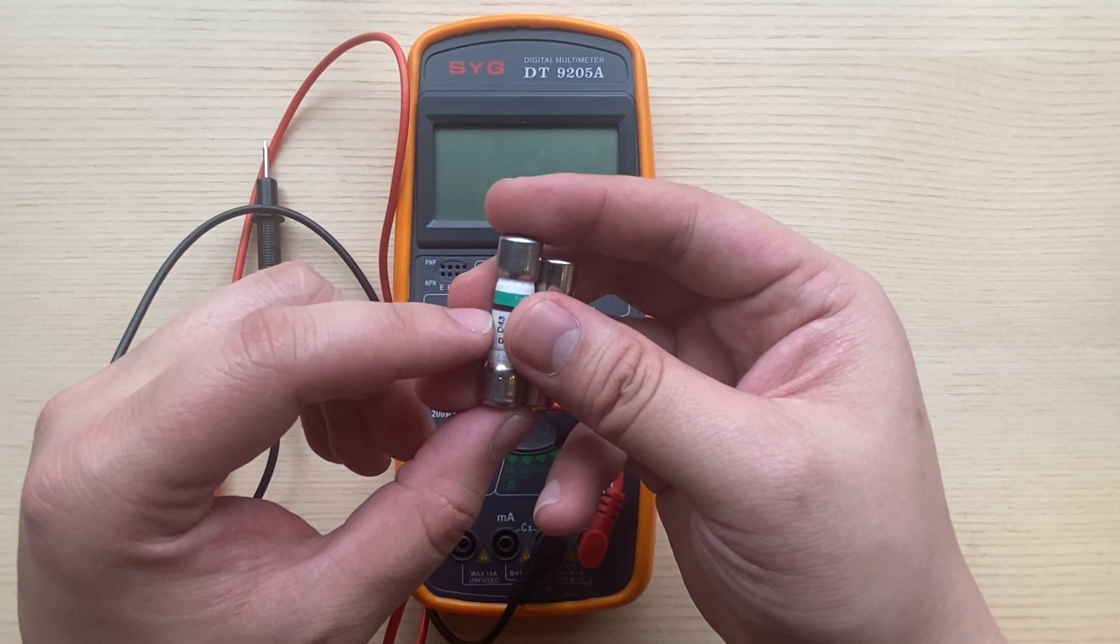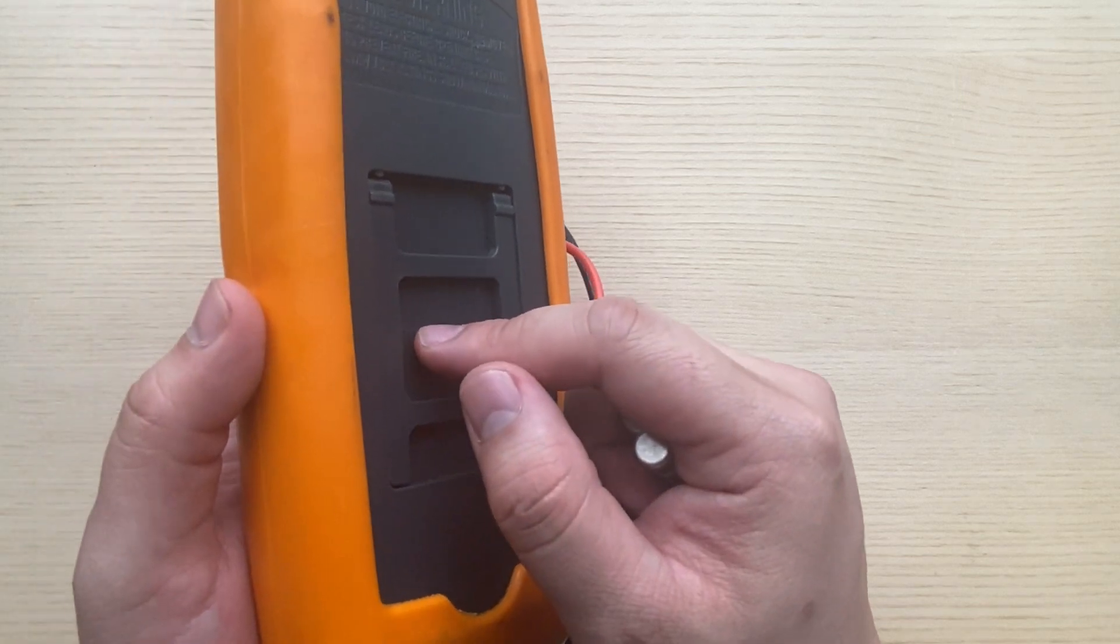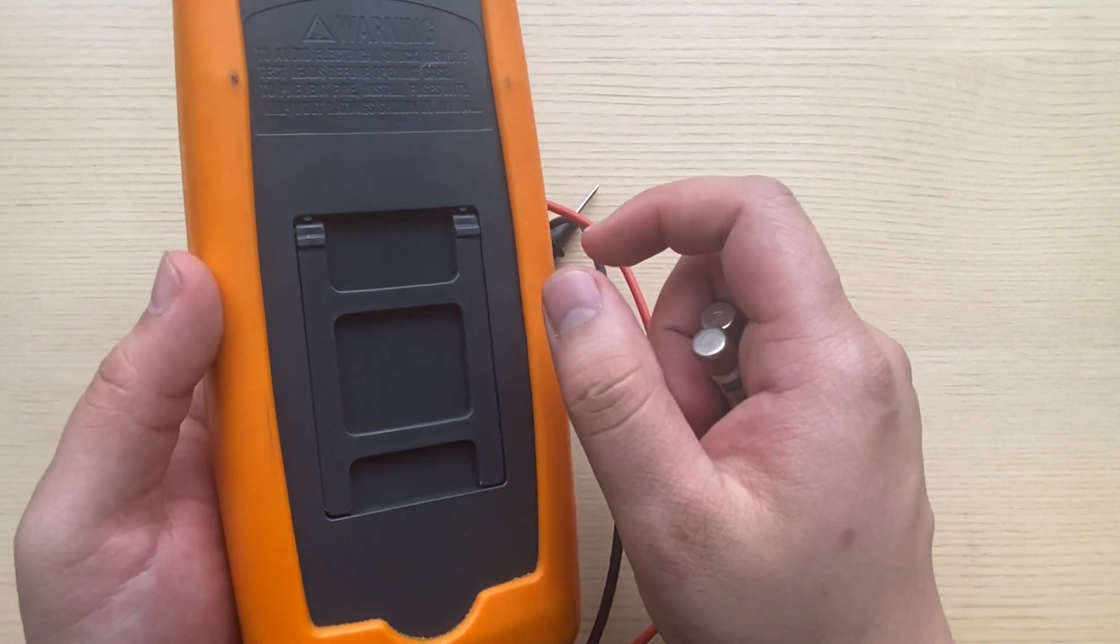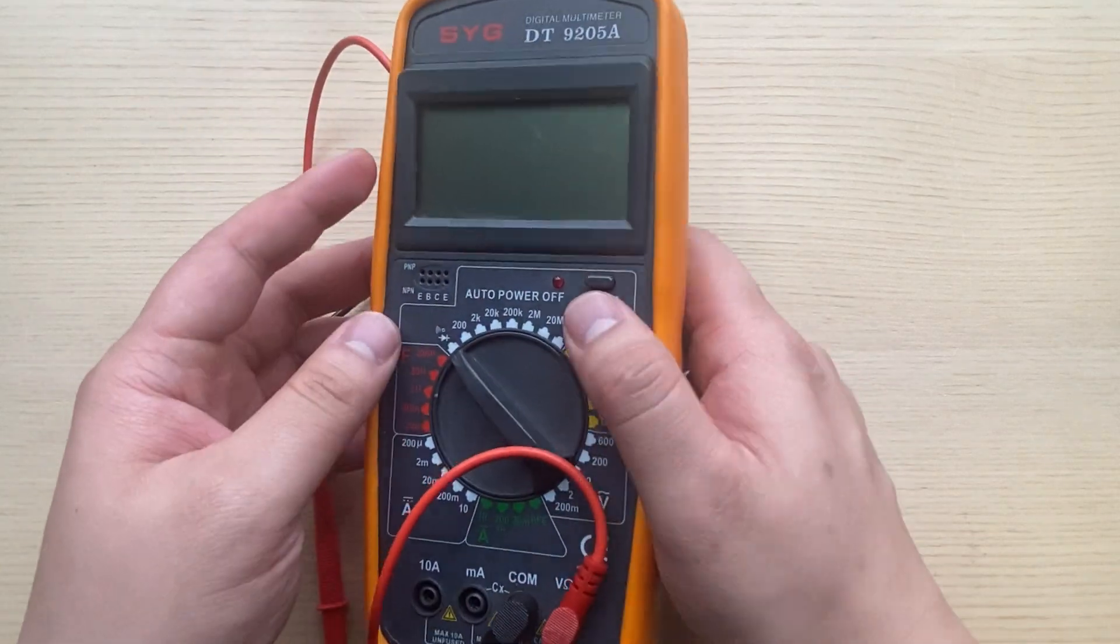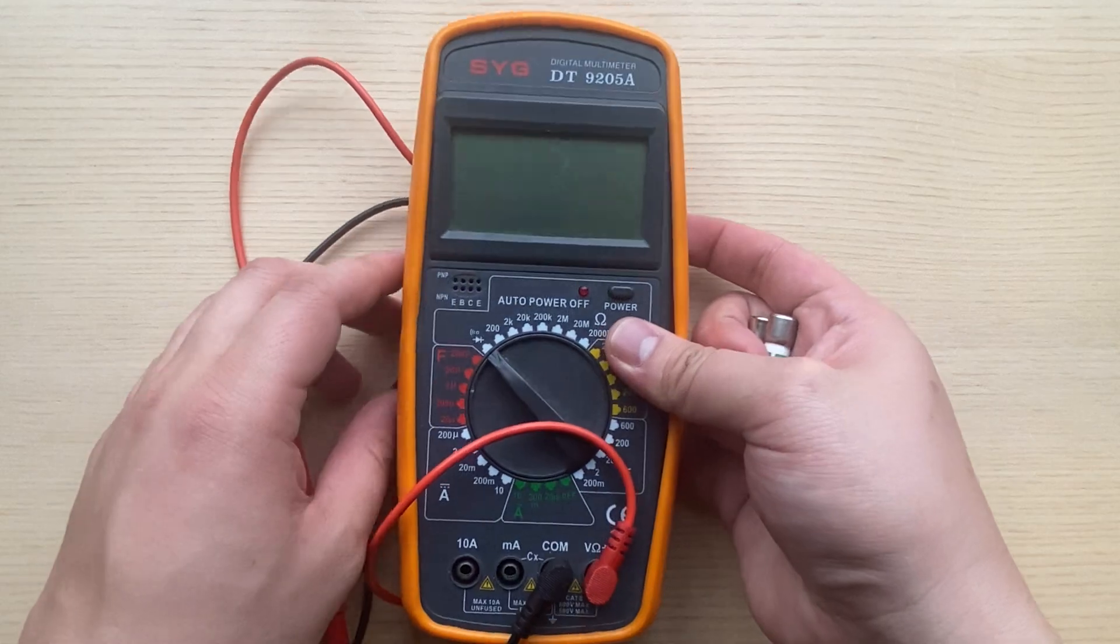Replacing a fuse is as simple as unscrewing the back of your multimeter, popping the blown fuse out, and sliding the new fuse in. For precise instructions, we recommend consulting the manufacturer's manual. Each multimeter is going to be slightly different.